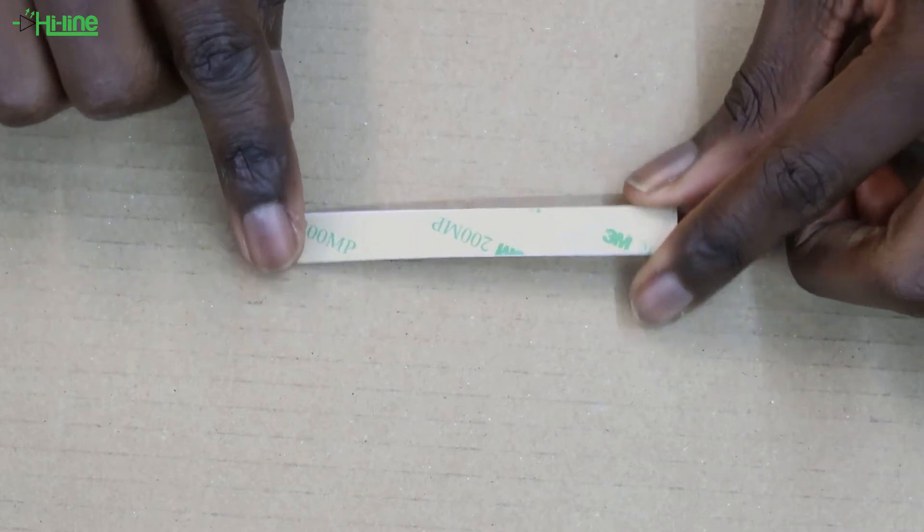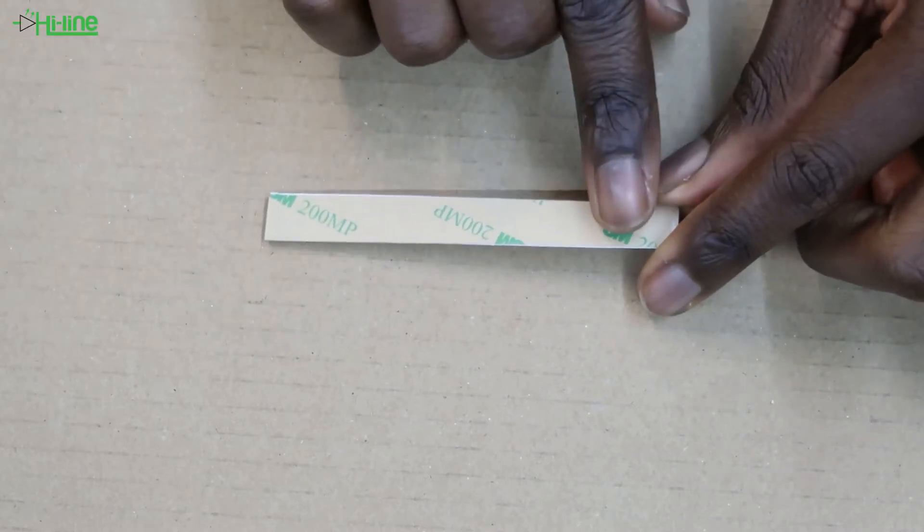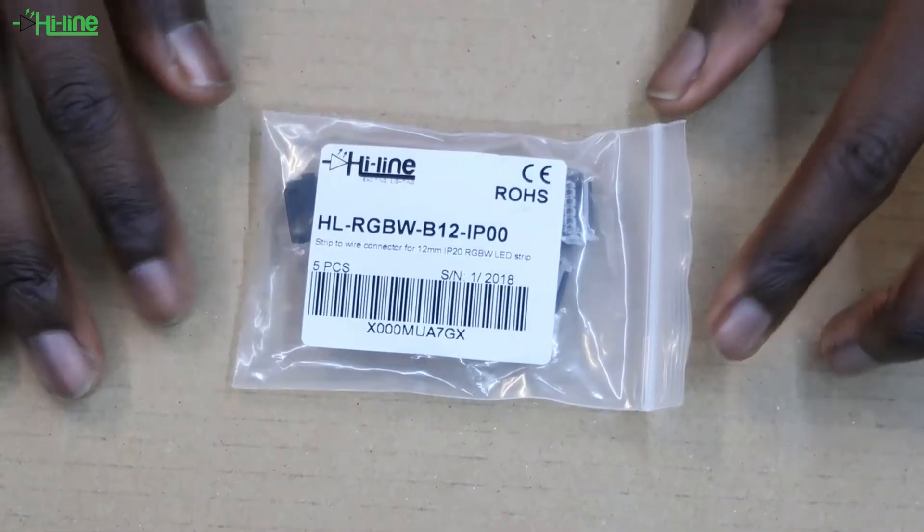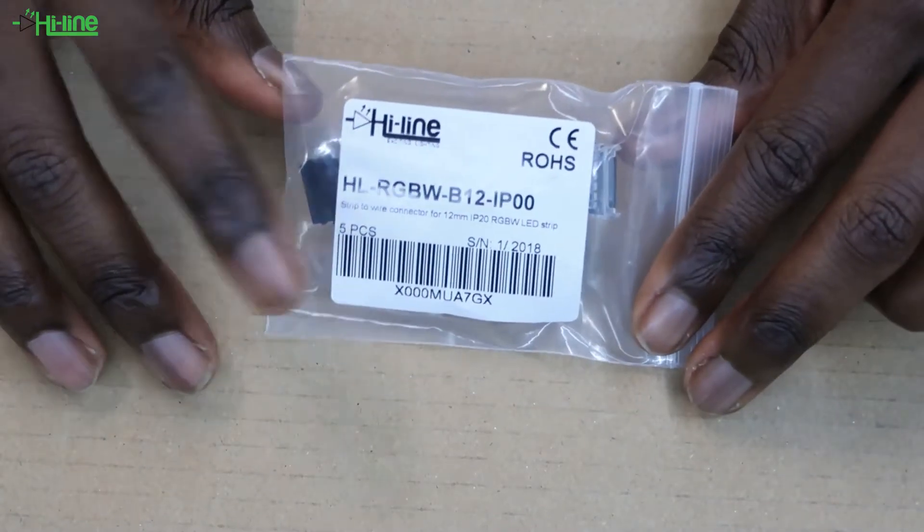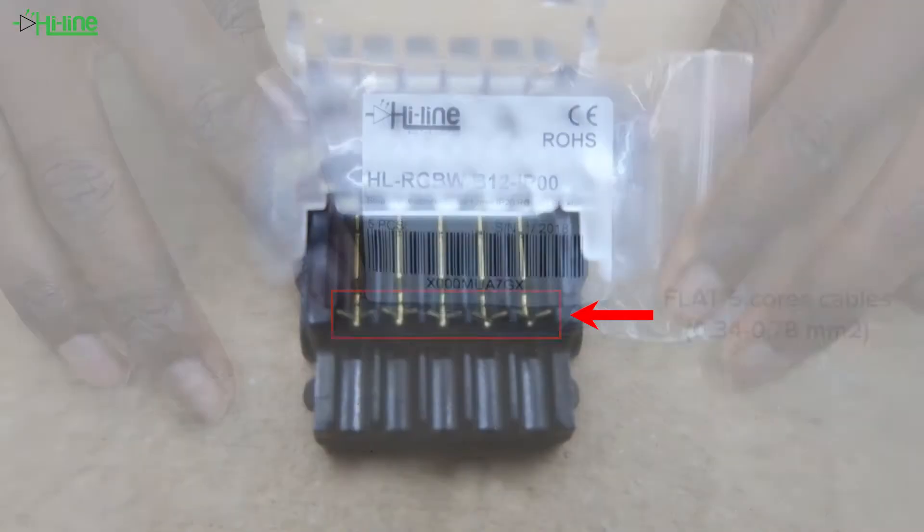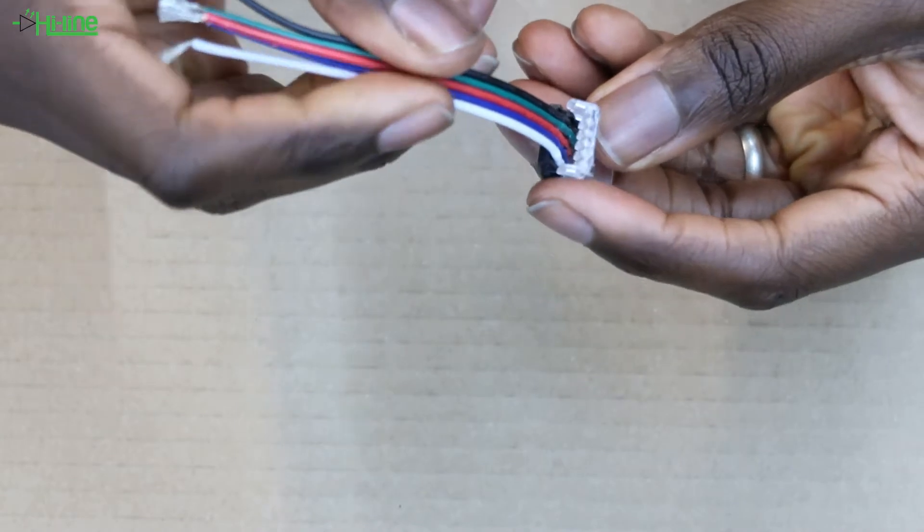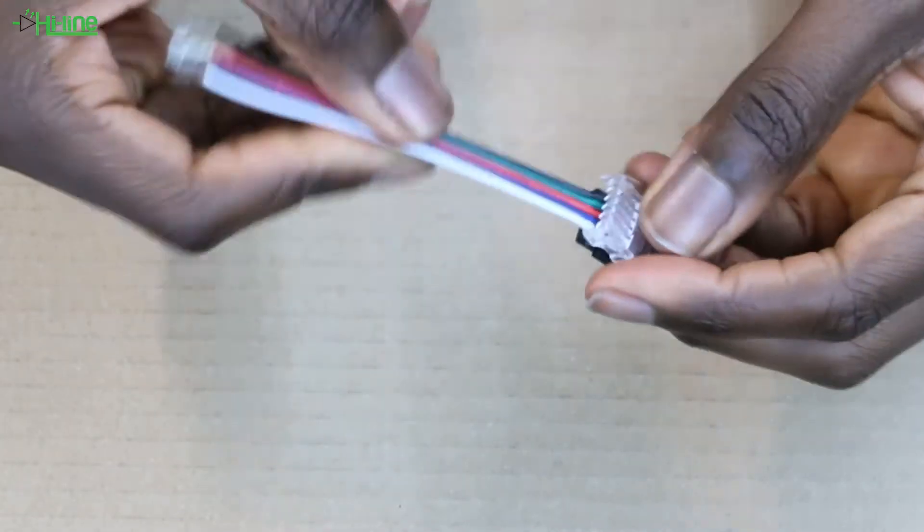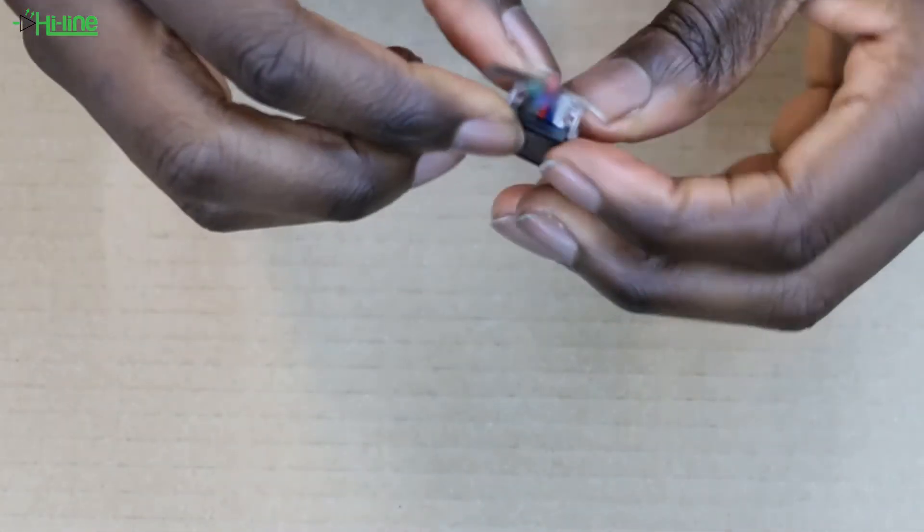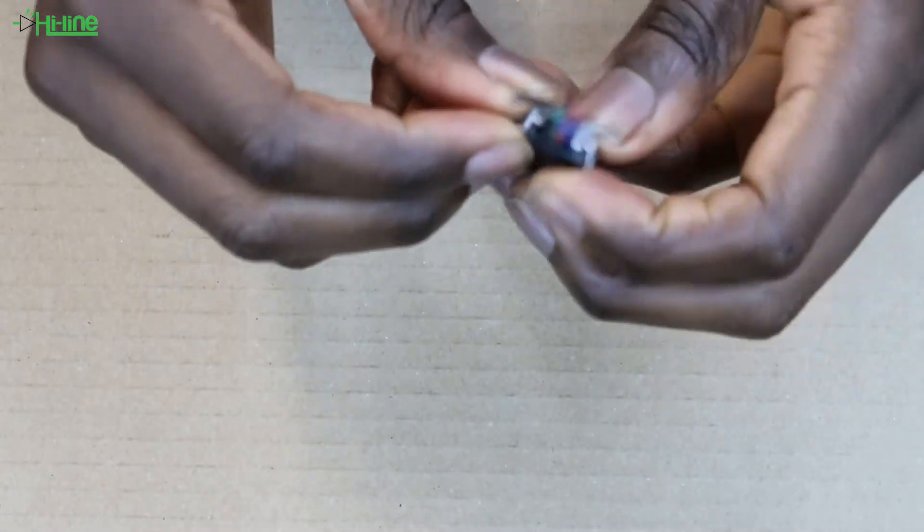Let's talk about connectors now. We have the RGBW strip wire connector, which is a HIPAA connector. For this side of the connector is where you will place your flat five core cable. Once you have your flat five core cable, you're going to place that right at the back of the power side of the connector.